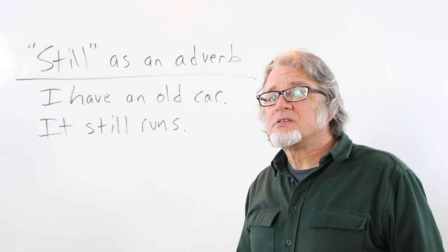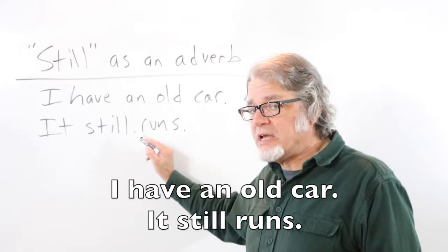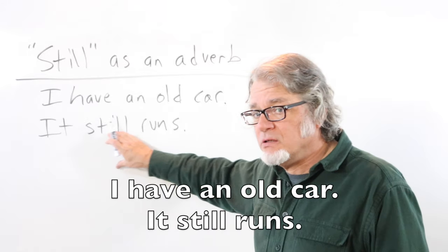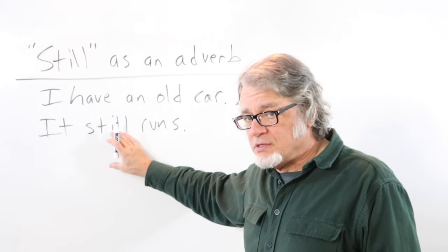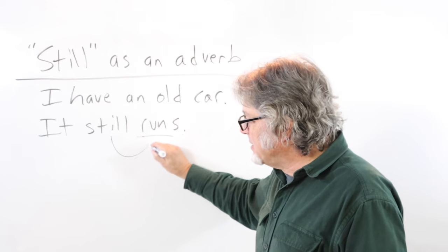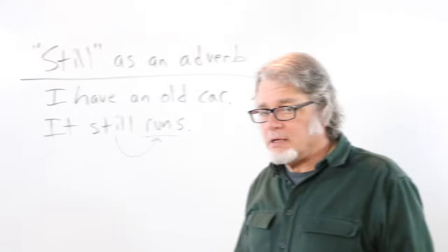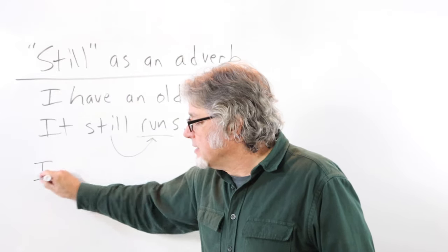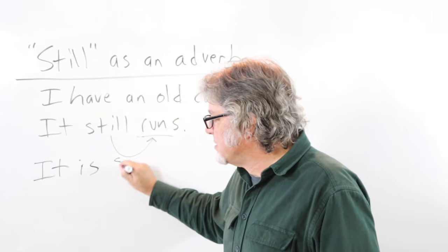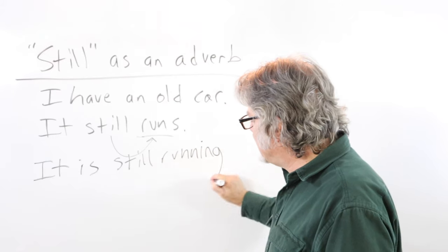In this sentence, still is an adverb. I have an old car. It still runs. Still is the adverb that modifies this verb. It gives information about the verb. I can also say it is still running. This is in the present continuous tense.